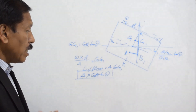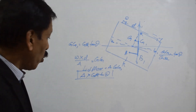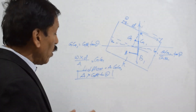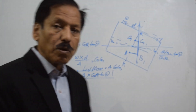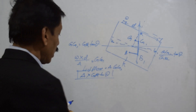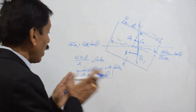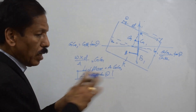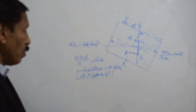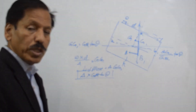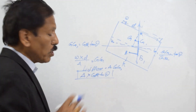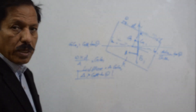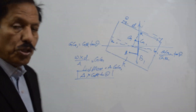This is a relationship we can remember for doing various list-based calculations. Whether it is initial or final listing moment, we always remember this formula: listing moment equals delta into GM·tan theta. Whenever there is a free surface effect present on board, we say this is GM fluid into tan theta. So whether you see a ship in listed condition, you can find out the listing moment present on the ship. If you know the displacement, GG1, and GM fluid, you can find out what the list is going to be.